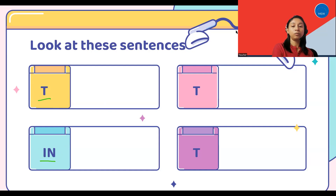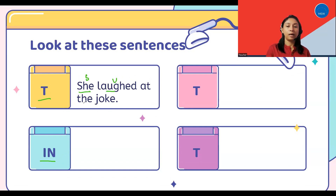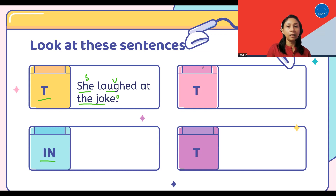Now let's move on to the first sentence. Every sentence has a subject, verb, and an object. However, it is possible that some sentences don't have an object, yet they will make sense. In this sentence, she is the subject, laughed is the verb, and the joke is the object. I hope you will agree with me. And if you think you do not know about subjects and objects, please check my video — I have made one video on subject and object as well. If you watch that video, hopefully your concept will be clear.